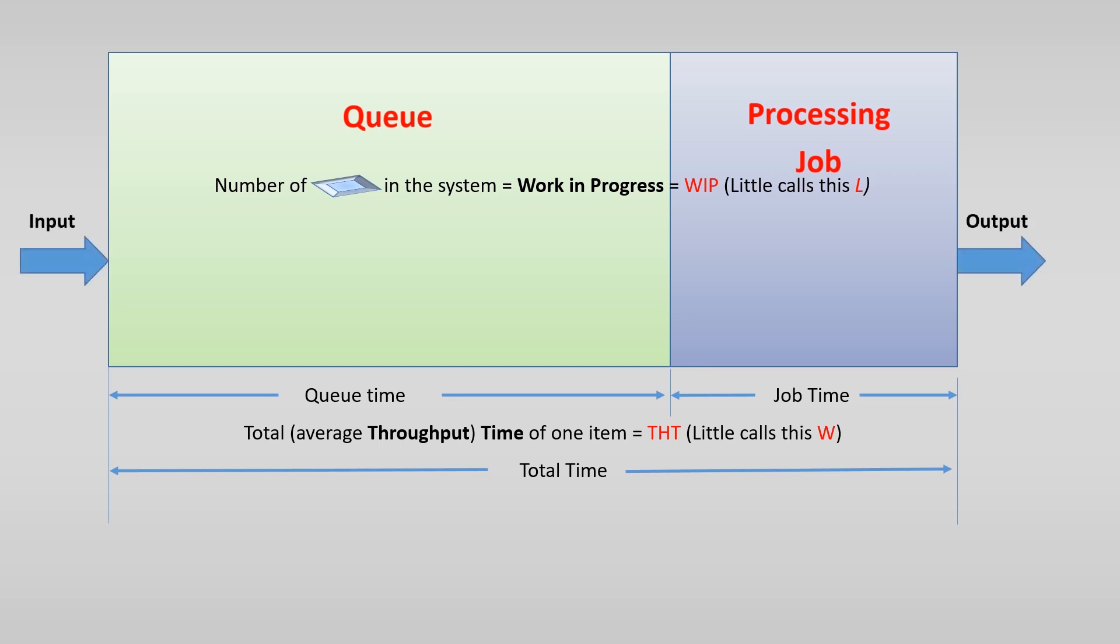The number of products entering the production system should be equal to the number of products leaving the system. And this we call the throughput. So the number of products going through the production system in a certain amount of time.